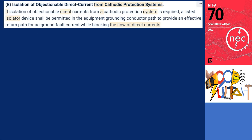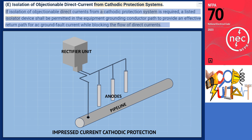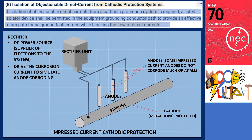Section 250.6E: isolation of objectionable direct current from cathodic protection systems. If isolation of objectionable direct current from cathodic protection systems is required, a listed isolator device shall be permitted in the equipment grounding conductor path to provide an effective return path for AC ground fault current while blocking the flow of DC current. Cathodic protection is a highly effective technique employed to prevent corrosion on metal surfaces. The provided illustration depicts a standard installation of an impressed current cathodic protection system. In this setup, the metal pipe that requires protection is considered the cathode, while the anode, through which current is discharged, is placed within the same electrolyte — typically soil — where the buried pipe is located. Rectifiers of different sizes and motor generator equipment supply electrons to the system and generate the corrosion current, simulating the corroding process that would typically occur at the anode.